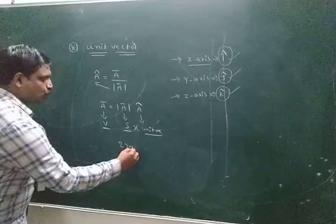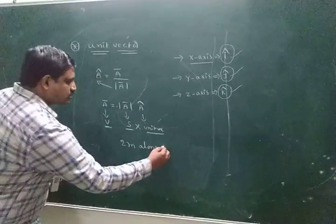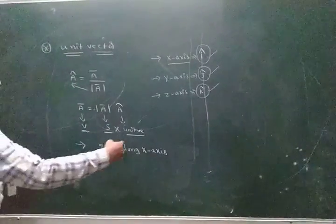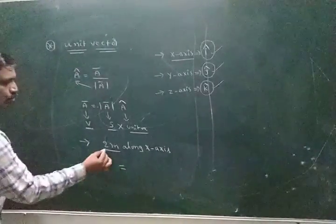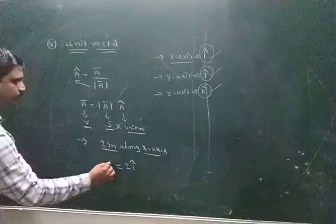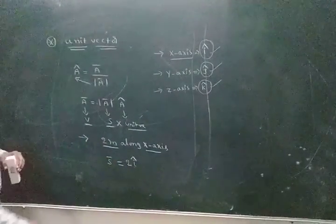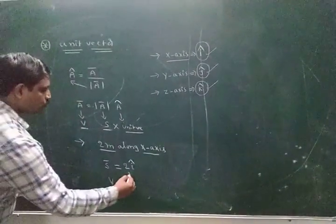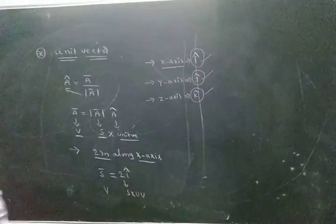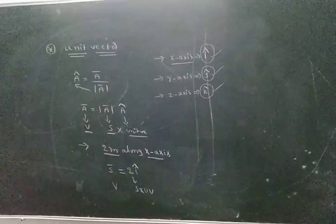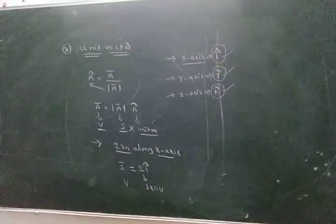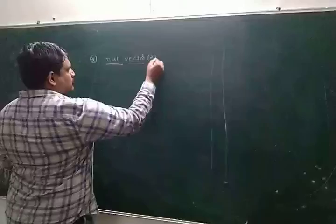For example, a body moves two meters along the X axis. This means the displacement is 2î. Here, 2î is the displacement: two is a scalar, and î is a unit vector. Vector equals scalar multiplied by unit vector. Similarly, body moves 4 meters along Y axis — displacement is 4ĵ.